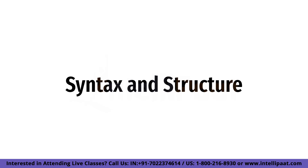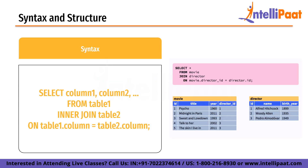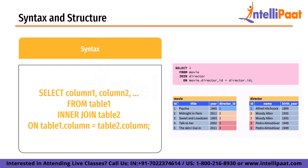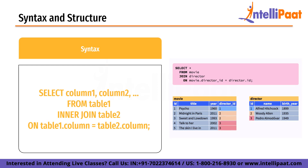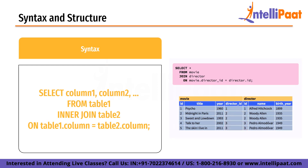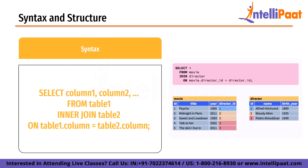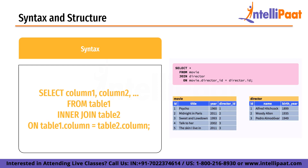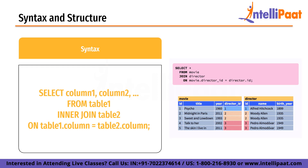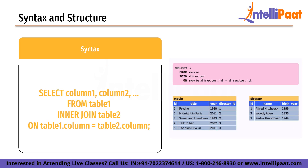Now we'll look at the syntax and structure of joins. To perform a join in SQL you need to use the JOIN keyword followed by the name of the table you want to join. The basic syntax for an inner join is displayed on the screen. Column1, Column2, etc. are the columns you want to include in the result set, and Table1 and Table2 are the names of the tables you want to join. The ON keyword is used to specify the join condition, which is the column that the two tables have in common.